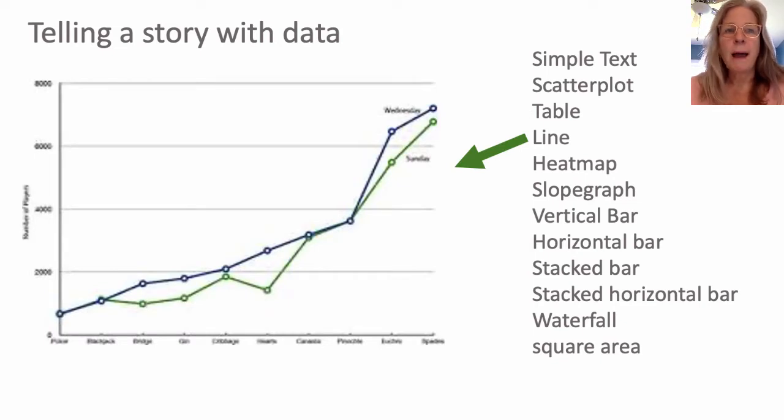Another option is a line graph. This will show, it's often used over time so that you can see, people usually read from left to right, so you can see that this line graph shows an increasing trend. If that's what you're trying to show then a line graph is useful.